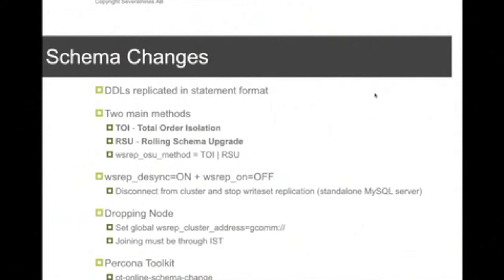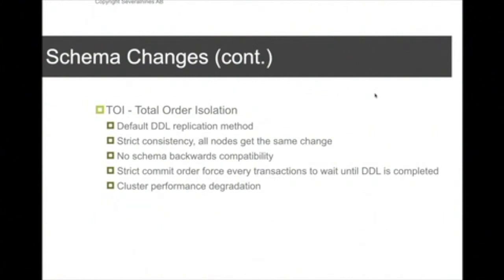Schema changes in Galera, there are basically two built-in methods. You have total order isolation and rolling schema upgrade. So total order is the slowest one. It actually blocks your cluster basically until that schema change has been done. So it's only really useful if you have changes that will not take too much time. So if you have a very large table, and you do a schema change with total order isolation, that may take a long time and it will block your cluster.